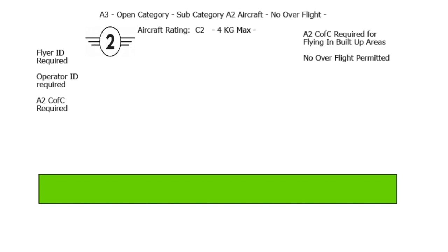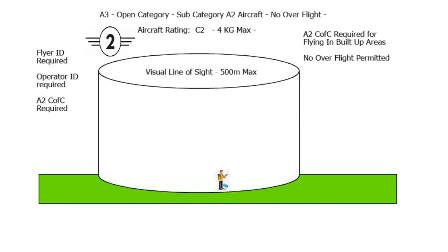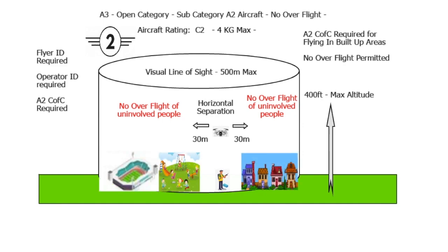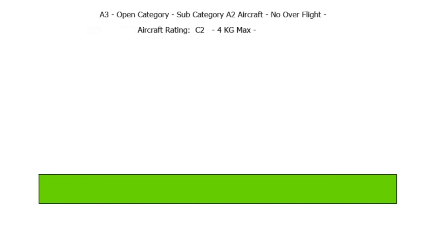You need your A2 CofC certificate, flyer ID, and operator ID. With the A2 CofC and a C2 marked aircraft up to 4 kilos in weight, you can fly with 30 meters horizontal separation from uninvolved people. You cannot overfly uninvolved people, but you can fly in a built-up area. You need your A2 CofC certificate, flyer ID, and operator ID.